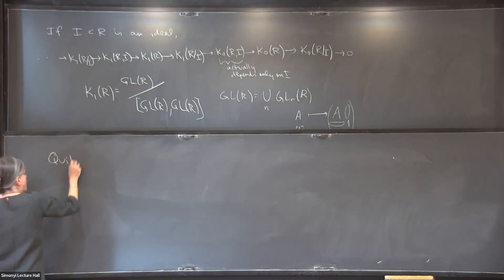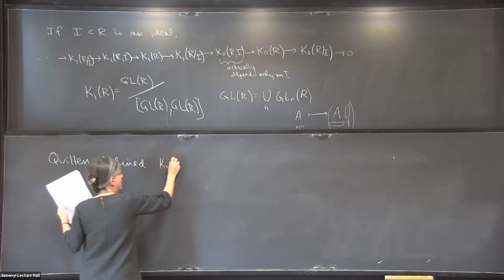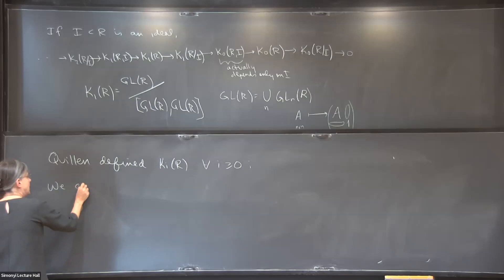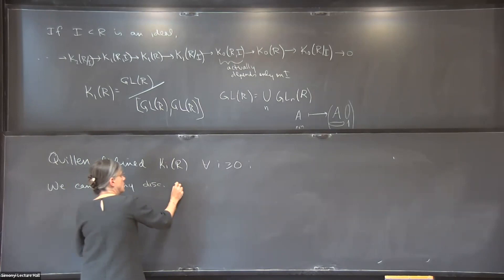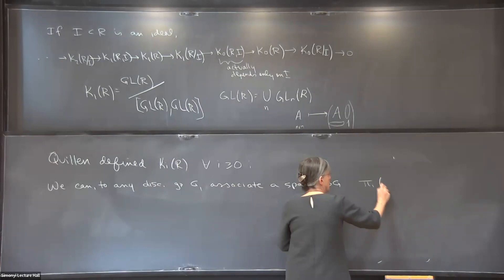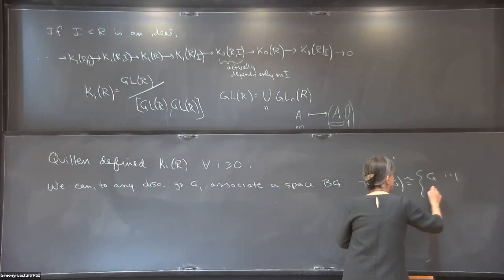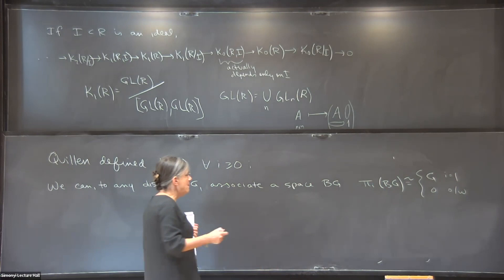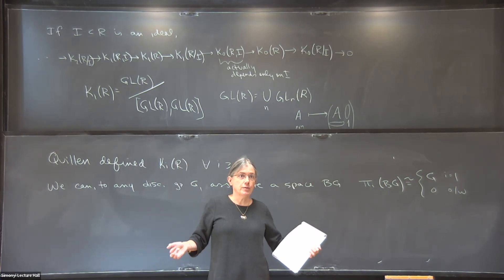Quillen defined a construction where to any discrete group G you associate a space BG where the homotopy groups are G if i = 1 and 0 otherwise. So basically you can take group theory and put all the groups as fundamental groups of suitable spaces with no other homotopy. Maps between these BGs are classified up to homotopy by homomorphisms of the groups. So we really have group theory living as level one of topological spaces.